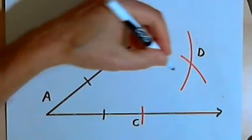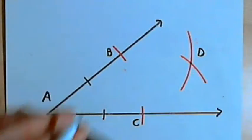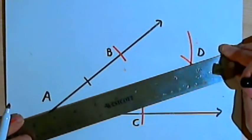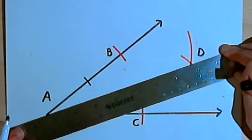And now if I connect points A and D, I'm going to be bisecting that angle.